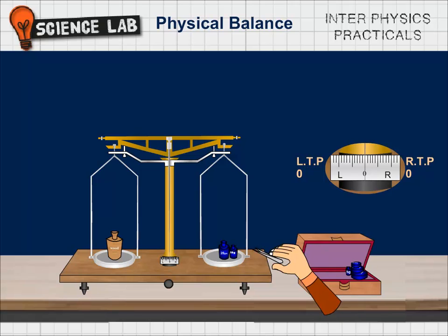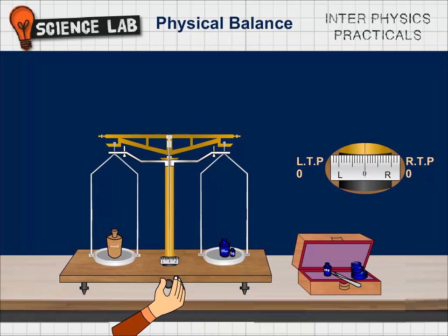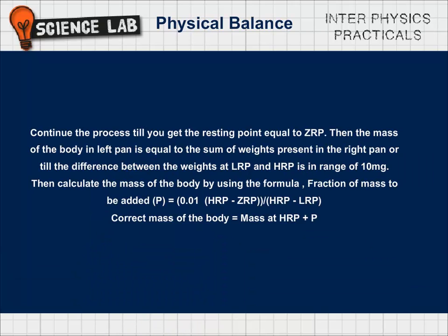Here we get a LRP so remove some weights from the pan and add the least weight from the weight box. Continue the process till you get the resting point equal to ZRP.